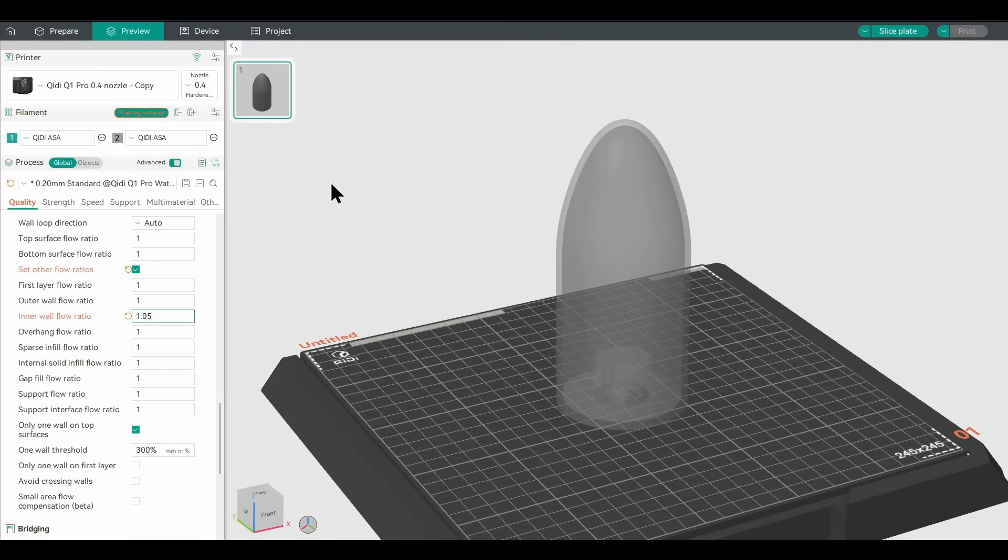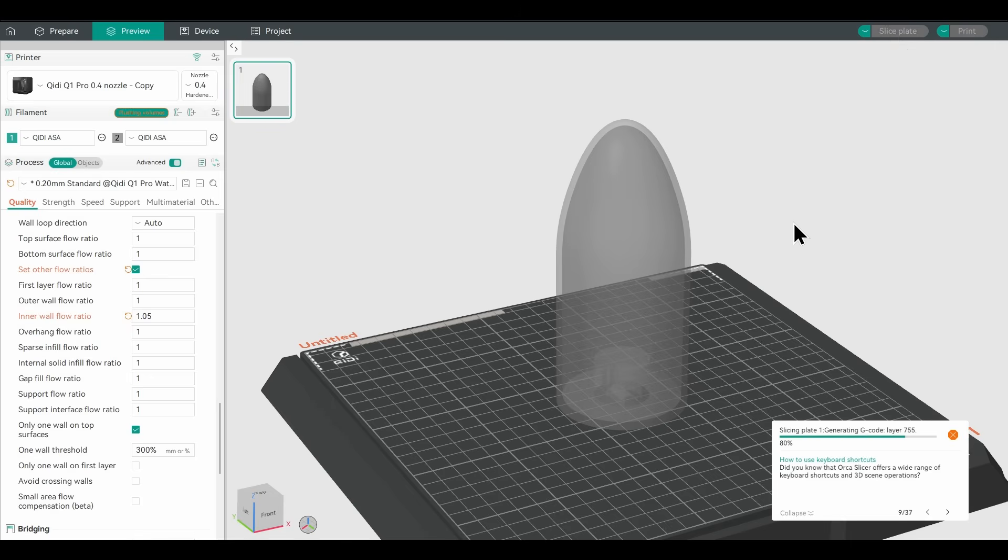I'm going to try a 1.05 multiplier and a 1.1 multiplier. Let's get them printed.